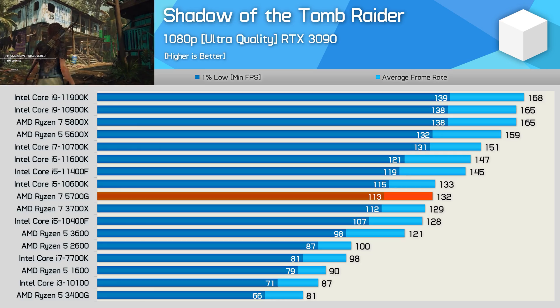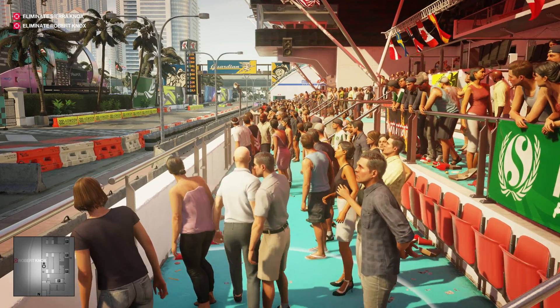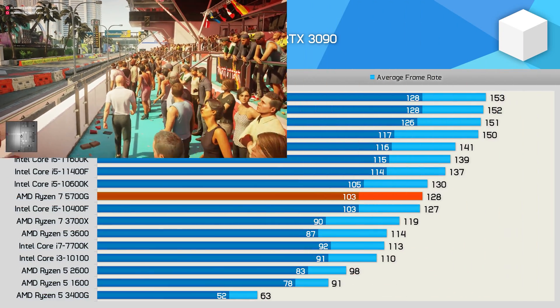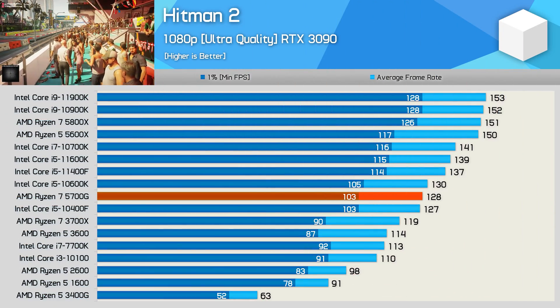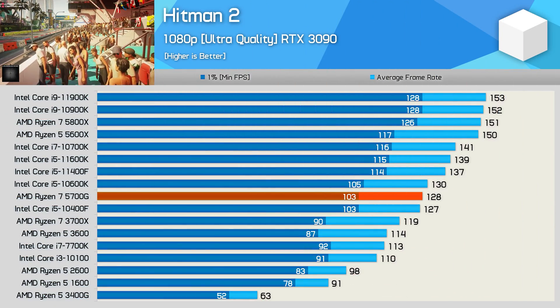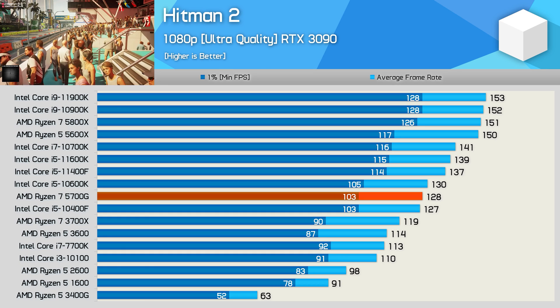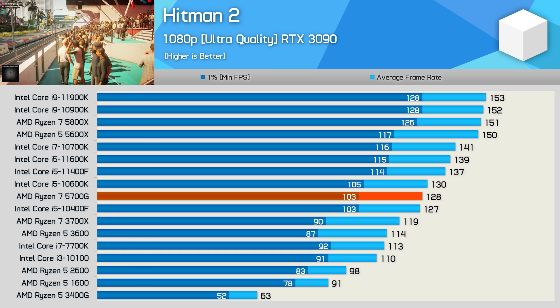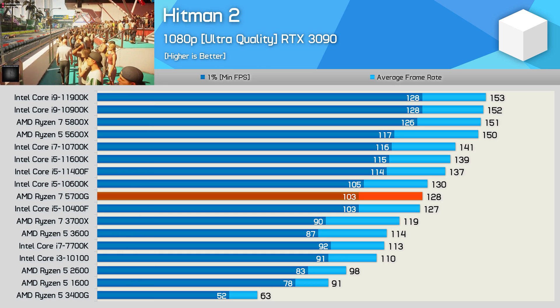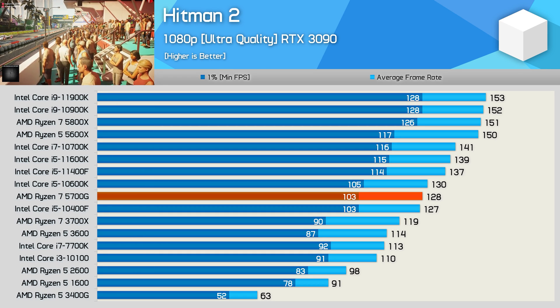I don't know why a lot of people say average FPS can't tell you about frames. We have 1% lows — have a look at those. They tell you what you need to know.